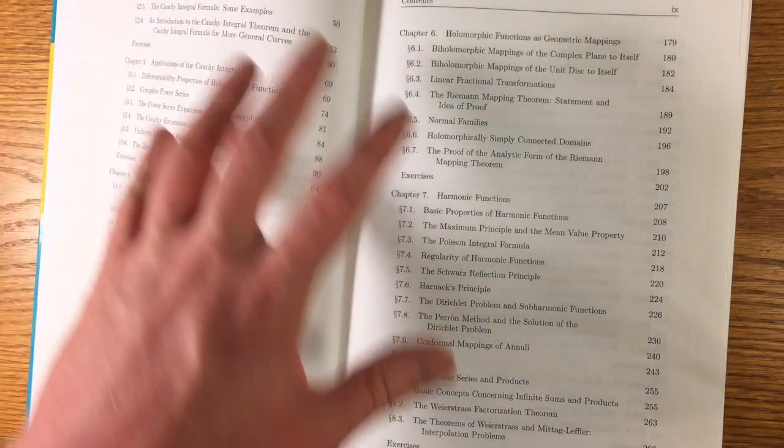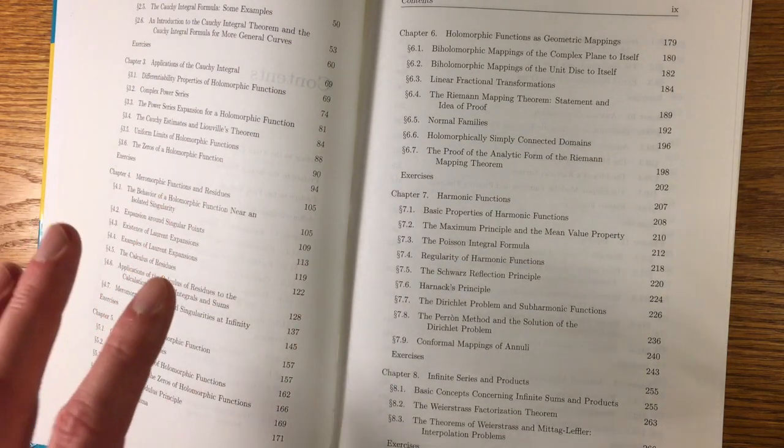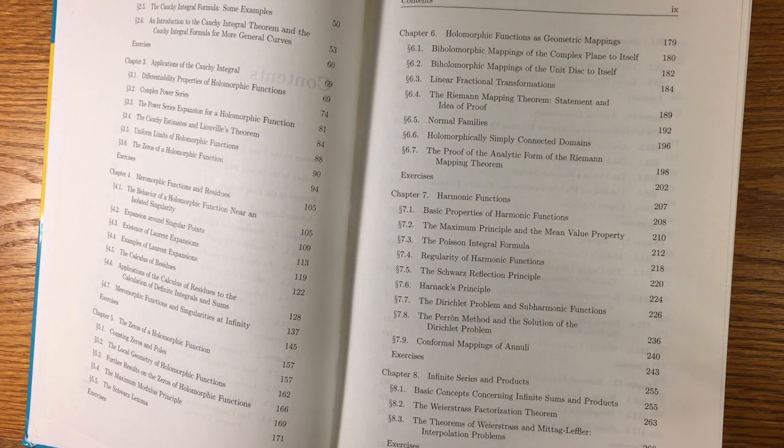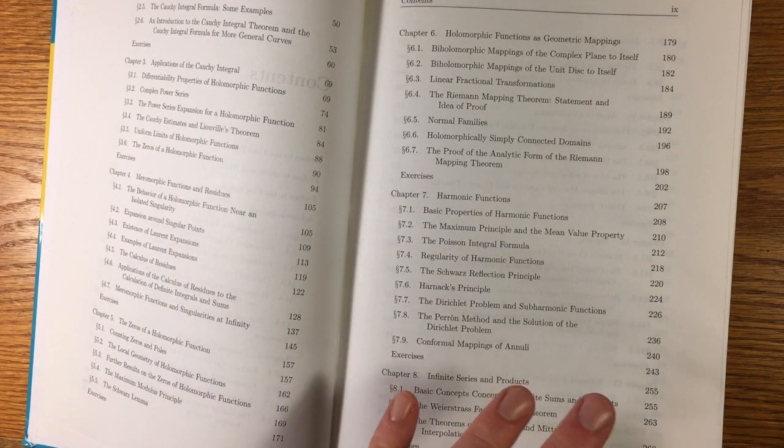Those seven chapters constitute what I call the core of complex analysis. This is what pretty much every book on the subject should cover. It's what you will need. Anything else is extra, pretty much.